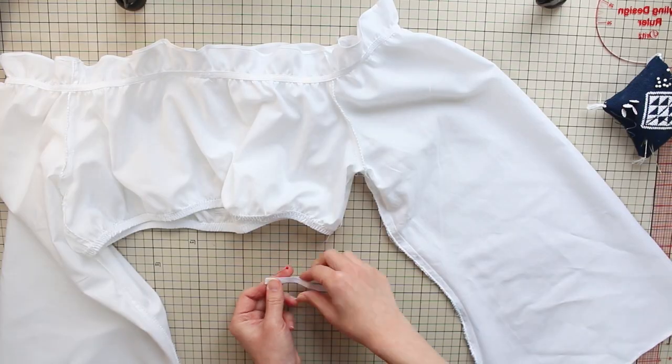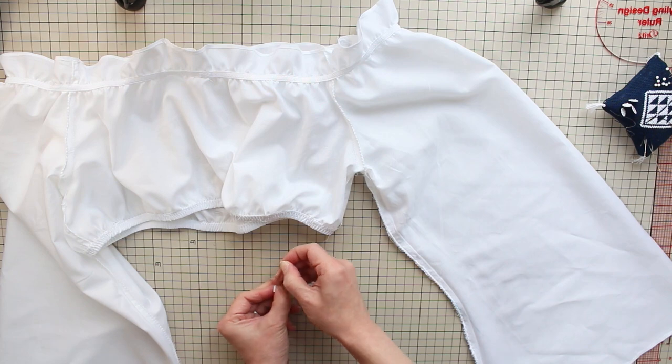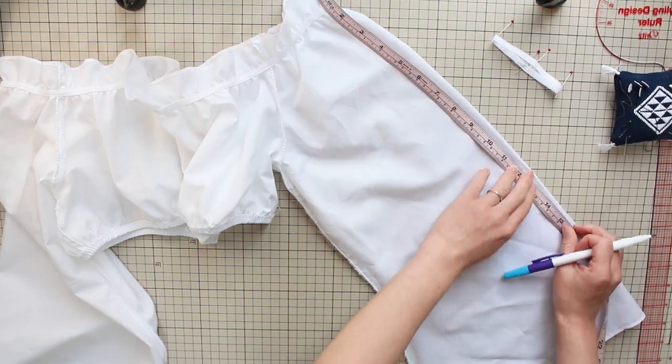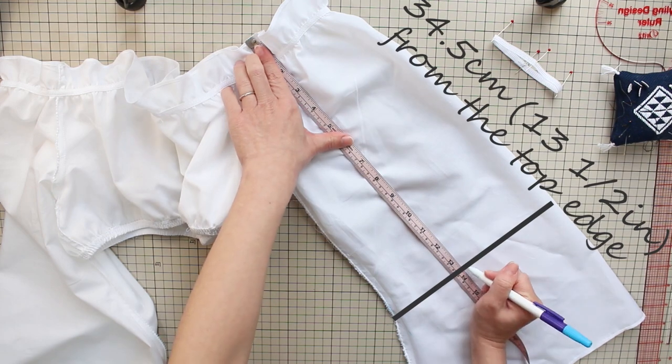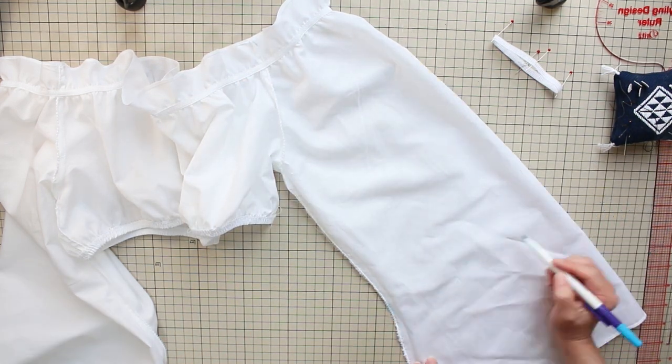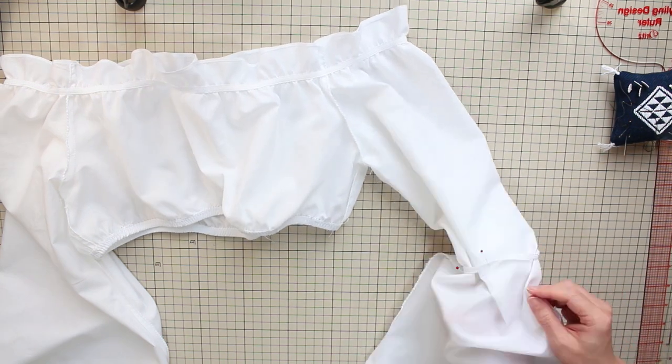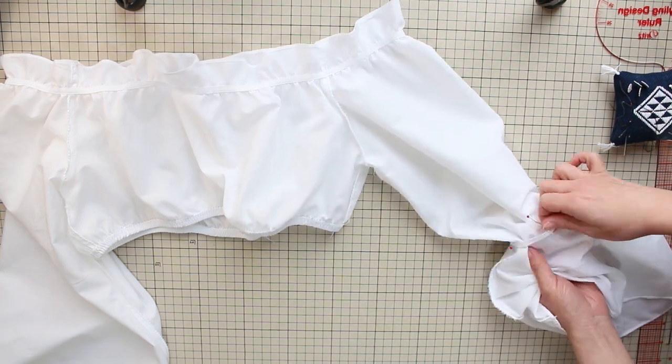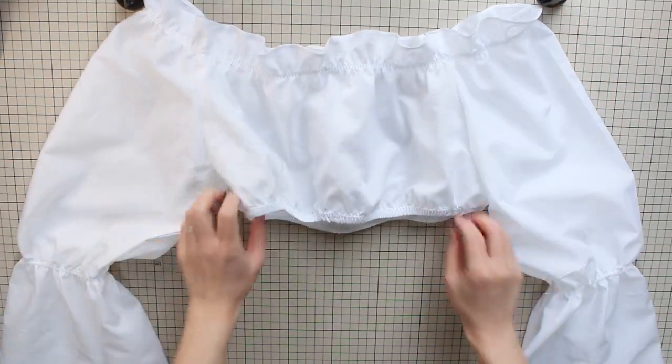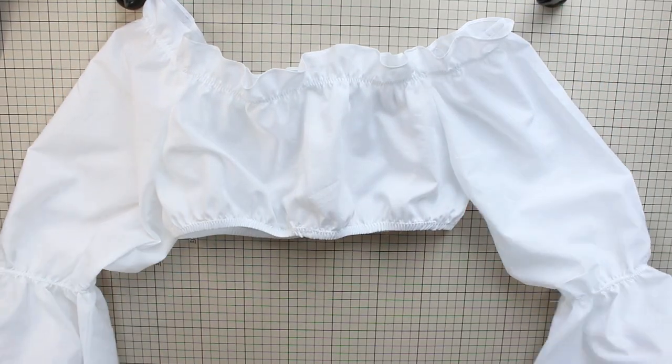For the sleeves, we attach the elastic exactly the same way. Mark quarters on the elastic and mark quarters on the wrong side of the sleeve at 34 and a half centimeters or 13 and a half inches from the top edge. Match them up and do a zigzag stitch as you stretch the elastic. Repeat for the other sleeve and your peasant crop top is complete.